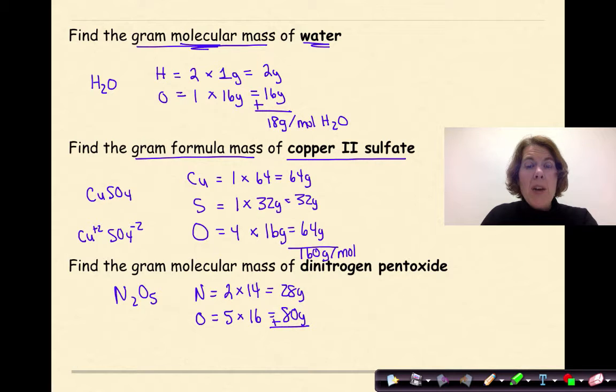So when I add these both together, I'm going to get 108 grams per mole of N2O5. So now you have three different examples of how to find gram formula mass.